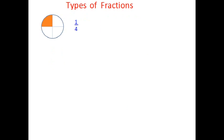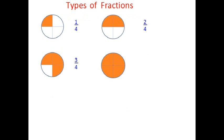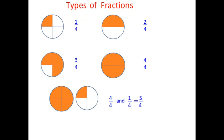If I eat two parts of the pizza, it would be 2 over 4. If I eat 3 quarters, it would be 3 over 4. If I eat the whole thing, it would be 4 over 4, or the whole pizza. Now what if I eat more than one pizza? That means I eat one full pizza and a quarter of a second one, which is 4 over 4 and 1 over 4 — so altogether that is 5 over 4.